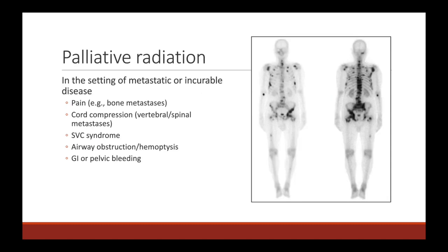If a patient has metastatic cancer or incurable disease, radiation can still be very effective at palliation. We can deliver some dose of radiation to help improve symptoms such as pain, bleeding, obstruction, or spinal cord compression. Radiation can be very effective at helping with these symptoms. Typically, when we're giving palliative radiation, we try to limit the number of treatments because these patients are often very sick, and we can deliver effective palliative doses anywhere from one to ten fractions.